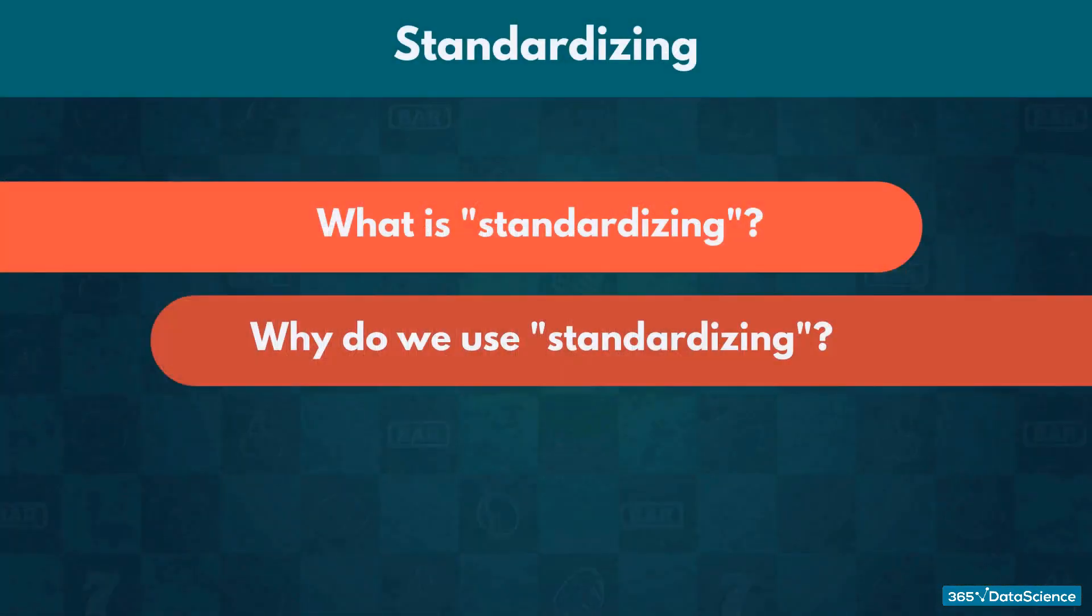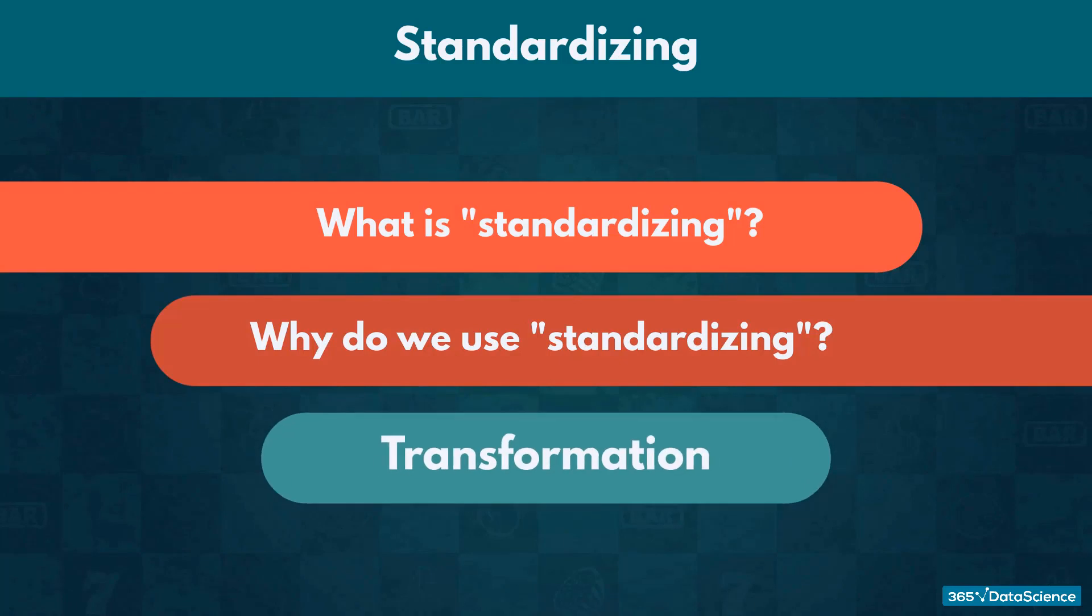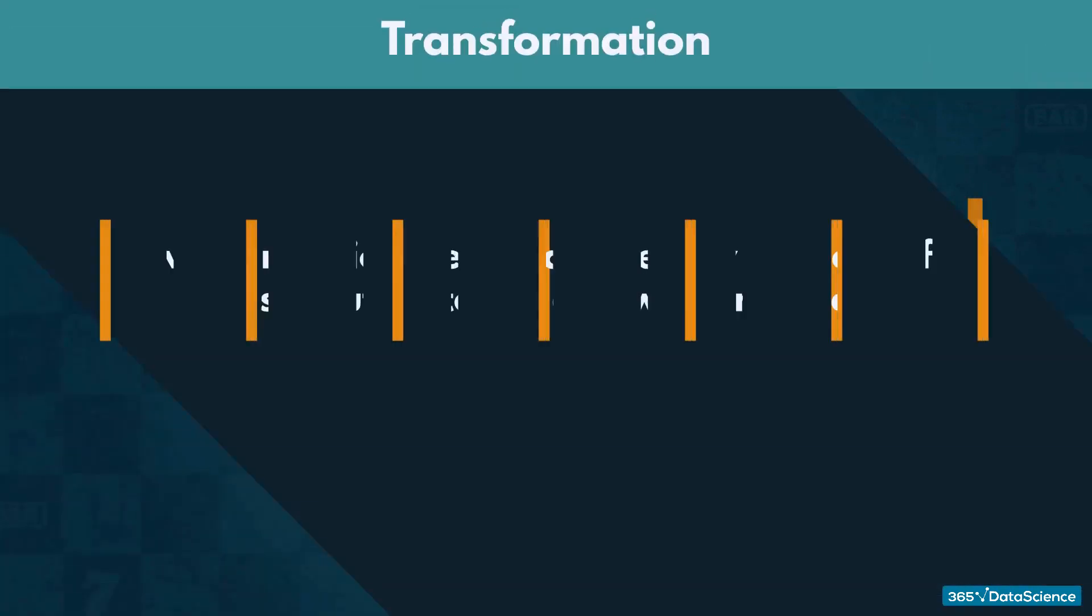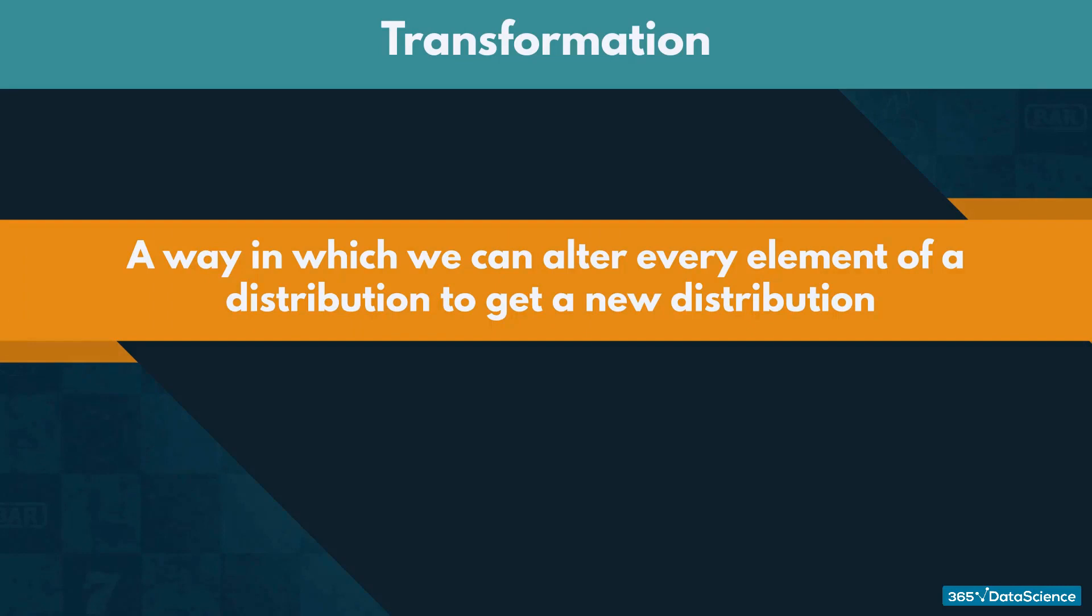Before we understand this concept, we need to explain what a transformation is. A transformation is a way in which we can alter every element of a distribution to get a new distribution with similar characteristics.